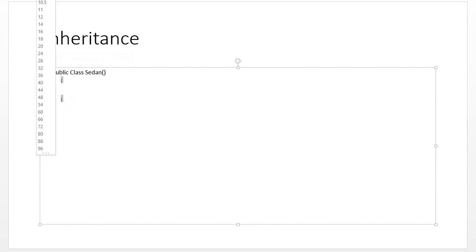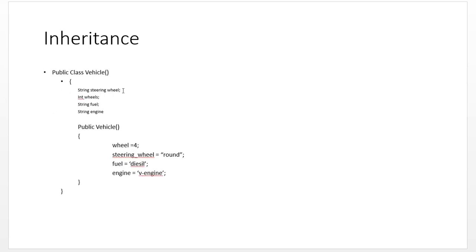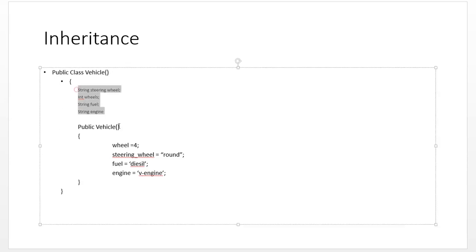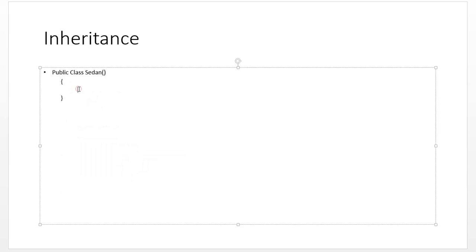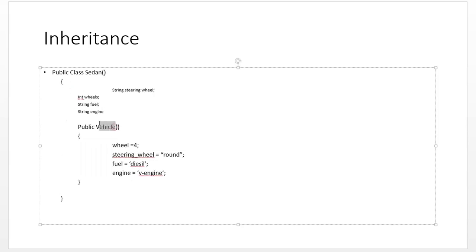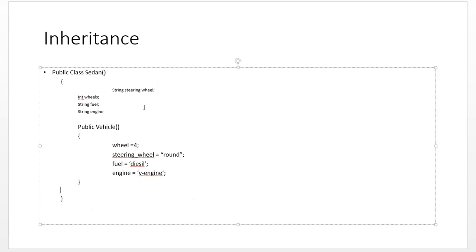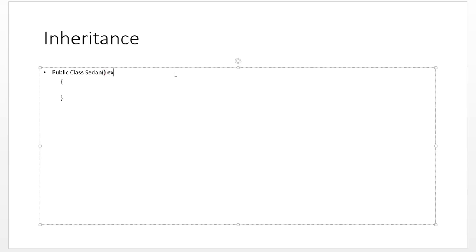A sedan has a steering wheel, wheels, fuel, and an engine. Instead of rewriting all those things again — which would be repetition — we just inherit the features of the vehicle class. In Java you say 'extends', so: public class Sedan extends Vehicle.